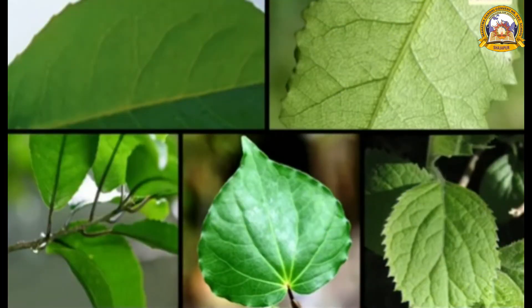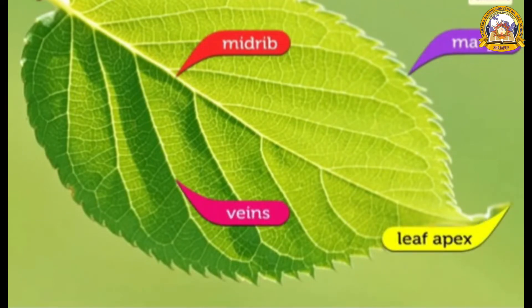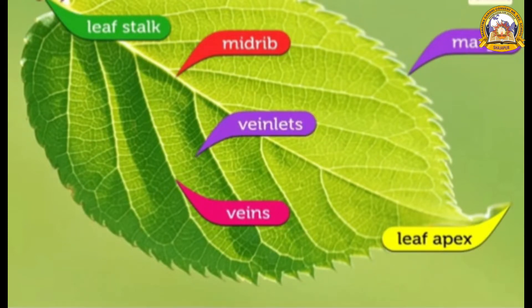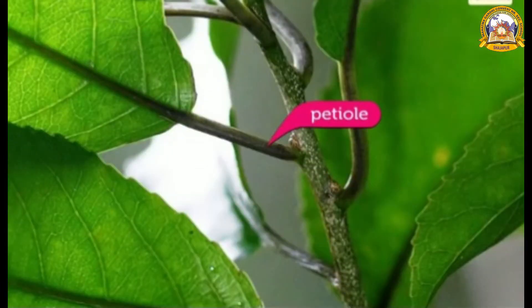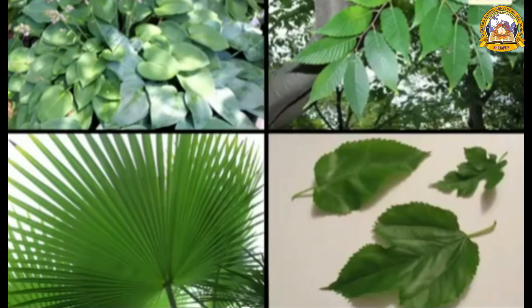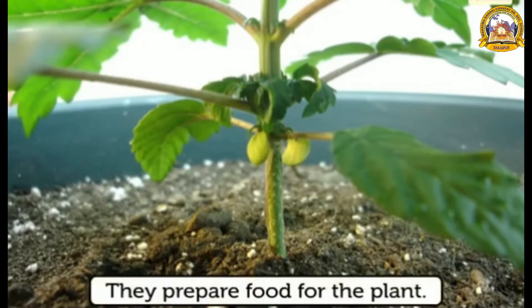Though leaves of different plants are different, they have some common features like midrib, margin, veins, leaf apex, leaf stalk, veinlets and petiole. The petiole is a short length of stem that joins the leaf to the main stem. Leaves come in all shapes and sizes, but they all have one function in common: they prepare food for the plant.